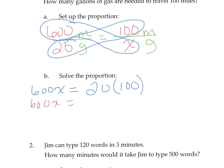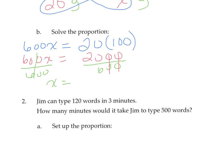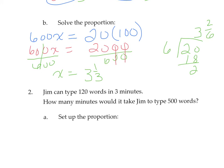Using cross products: 600X equals 20 times 100, so 600X equals 2,000. We divide by 600 to isolate X. Reducing the zeros, we have 20 divided by 6, which is not a whole number, but we can make it a mixed number: 3 and 2 sixths, which reduces to 3 and 1 third. The units are gallons, so the answer is 3 and 1 third gallons.